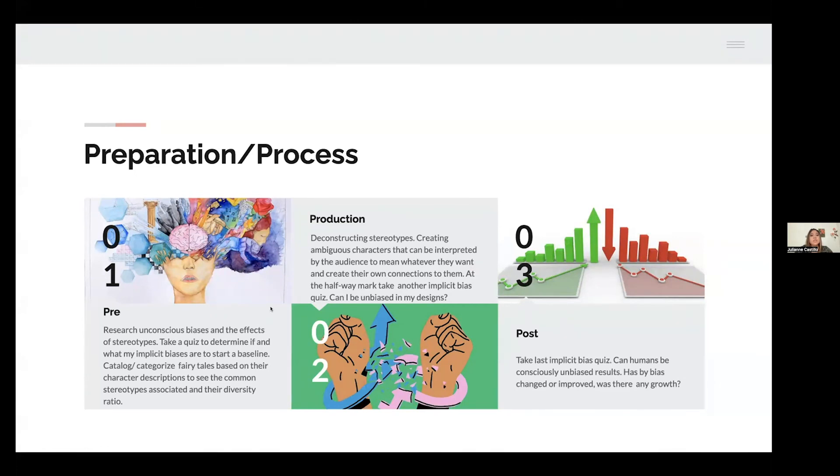In production, I want to deconstruct the stereotype by creating ambiguous characters that can be interpreted by the audience to mean whatever they want and so they can create their own connections to them. At the halfway mark of my project, I want to take another implicit bias quiz to see if I have stayed the same, if I've improved or even worsened, and I want to see if I can even be unbiased in my own designs.